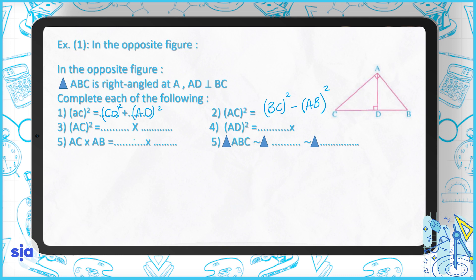Question three: AC² is what times what? Since it involves multiplication, it's the Euclidean theorem: AC² = CD × CB.